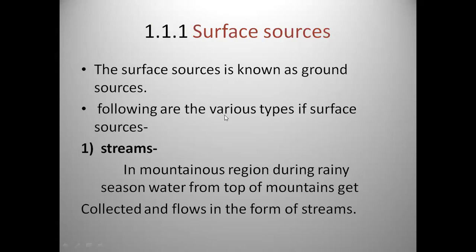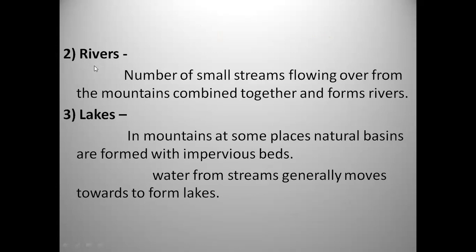Surface sources are also known as ground sources. The first type of surface source is streams. In mountainous regions, during rainy season, water from the top of mountains gets collected and flows in the form of streams. The second surface source is rivers — a number of small streams flowing from the mountains combine together to form rivers. The third source is lakes: in mountainous regions, natural basins are formed and water gets stored in these basins to form lakes.